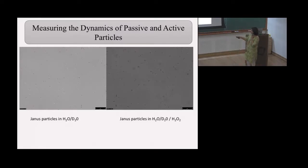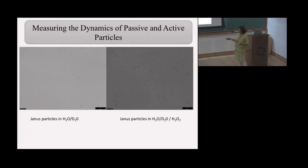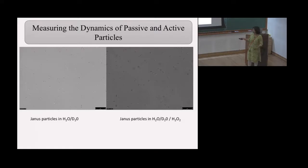Here are videos we captured. The video on the left shows Janus particles with no hydrogen peroxide — no fuel. These particles are basically just diffusing in an H2O/D2O mixture. We had to match density because Janus particles have a density of 1.05, so we don't want them to sediment. You can see some random motion, but no directional motion.